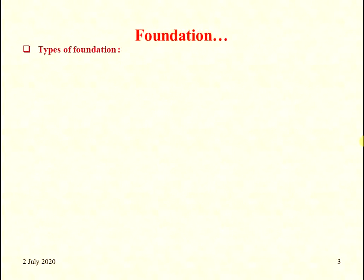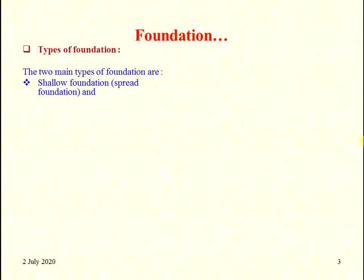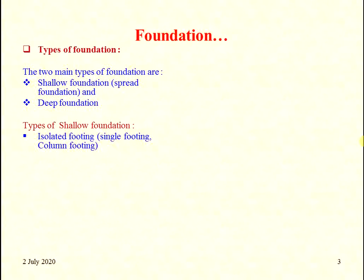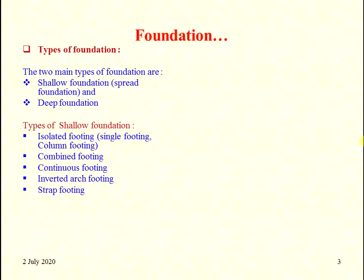There are mainly two types of foundation: first is shallow foundation or spread foundation, and second is deep foundation. Under shallow foundation, the sub-types are: isolated footing (single or column footing), combined footing, continuous footing, inverted arch footing, strap footing, and mat foundation.